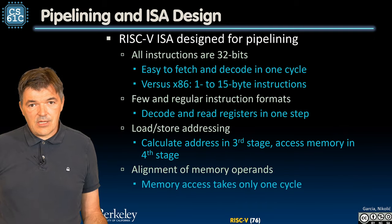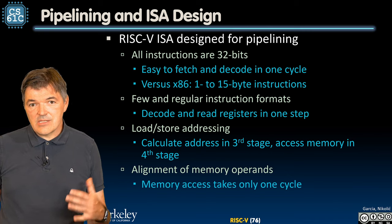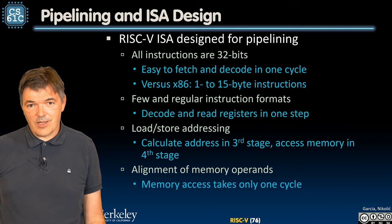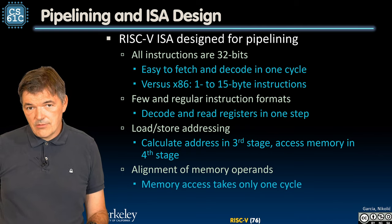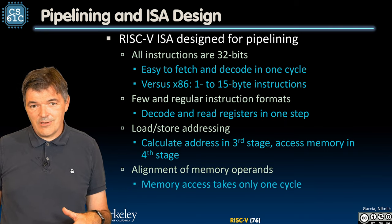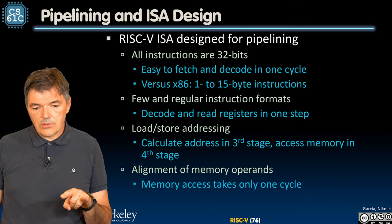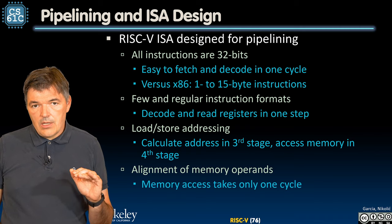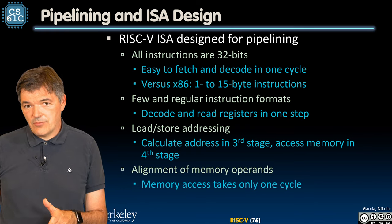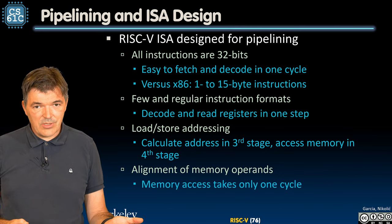A few notes about ISA design and which ISAs are good for pipelining. RISC-V is a type of RISC ISA designed with pipelining in mind. There are several features that are very helpful for designing a pipeline. In our RV32 version, all instructions and registers are 32 bits, and in every variant of RISC-V, all instructions are 32 bits. So all instructions are easy to decode in one cycle. Compare that to x86, where instructions can be 1 to up to 15 bytes. Decoding is really complicated there — you may look at one instruction and be unable to fully decode it.